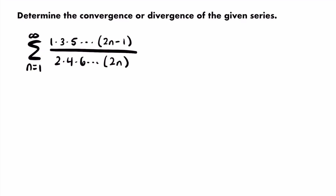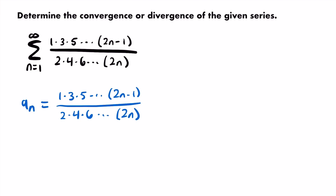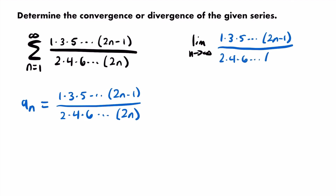To determine if this series converges or diverges, the first thing I always recommend is the divergence test. All we do is take the limit as n approaches infinity of the sequence from the series and see if it doesn't equal 0. If it doesn't equal 0, we immediately conclude the series diverges. But if the limit equals 0, the divergence test is inconclusive. Our sequence a sub n is 1 times 3 times 5 multiplied up until 2n minus 1, divided by 2 times 4 times 6 multiplied up until 2n.